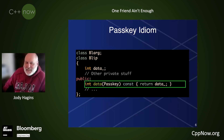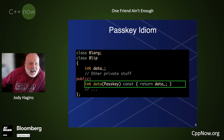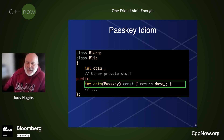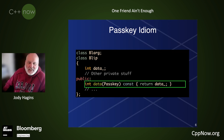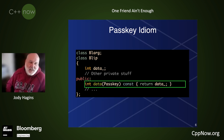This is called the passkey idiom, and the parameter is there solely to provide access to this member function. Anyone with the passkey can call this function. If you don't have a passkey, then you can't call this function. The member function is kind of like a door to a room that has access to some subset of the private stuff, and if you have a passkey, then you can open the door.